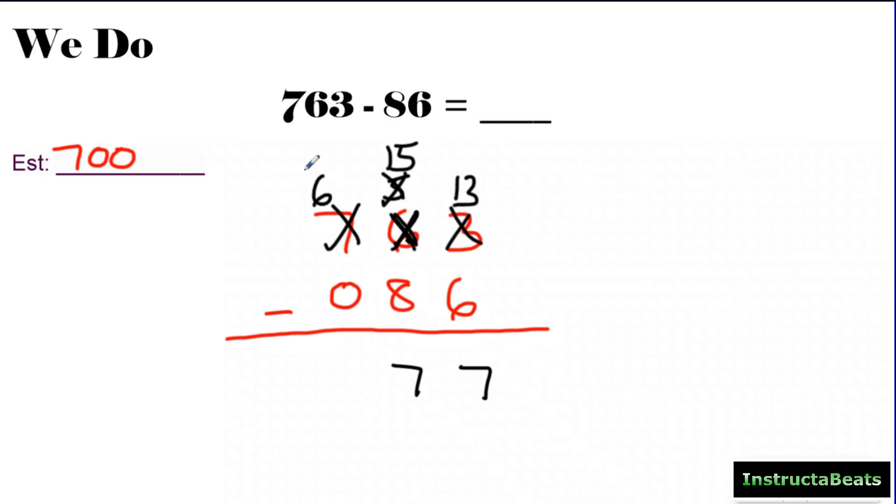Now, 6 minus 0, more on the top, no need to stop. So 6 minus 0 is 6. So the difference for this subtraction equation is 677. 763 minus 86 is 677, which is pretty reasonable because it was close to my estimate.